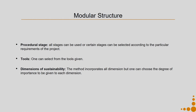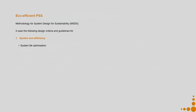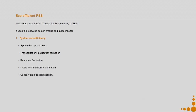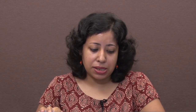The third level of modularity the MSDS methodology offers is that although it considers all three dimensions along with many sub-dimensions, it allows you to give different priority levels to each. For example, in system eco-efficiency — dimension one — sub-dimensions include system life optimization, transportation/distribution reduction, resource reduction, waste minimization, valorization, conservation, biocompatibility, and toxicity reduction. You can associate different levels of priority to each of these sub-dimensions depending on the context for which you are designing.